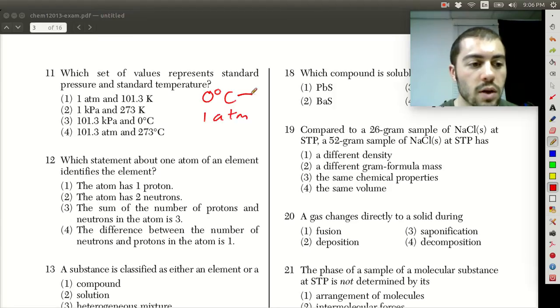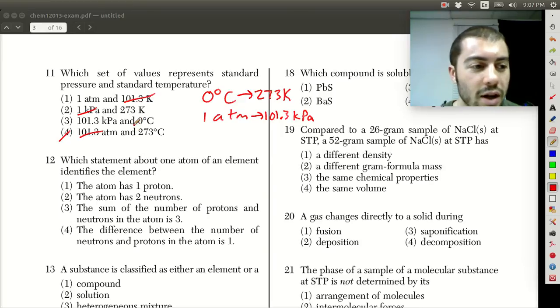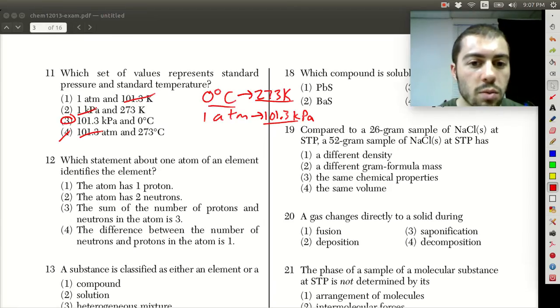Some of the other units we have here are Kelvin. So 0 Celsius would be 273 Kelvin, and 1 atmosphere would be 101.3 kilopascals. Watch your units here and see which ones match up with the units for STP given on the reference table. It's not 101.3 atmospheres, not 1 kilopascal, not 101.3 Kelvin. They've got similar numbers trying to trick you. Just watch your units - it's 101.3 kilopascals and 273 Kelvin or 0 degrees Celsius. That would be answer choice 3. Straight off the reference table, should be a pretty simple question.